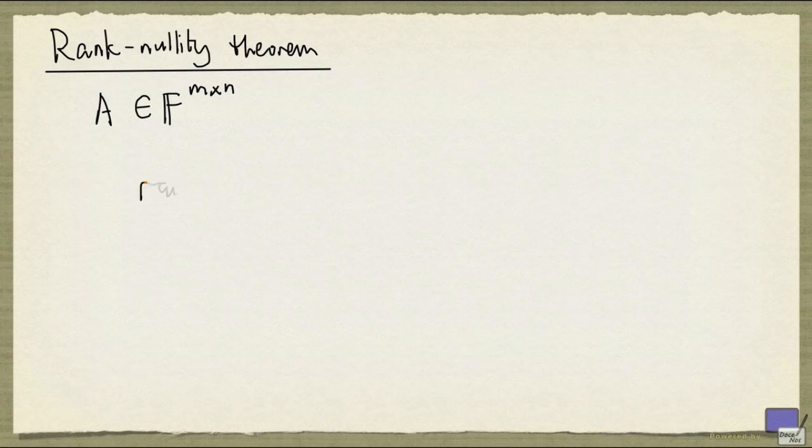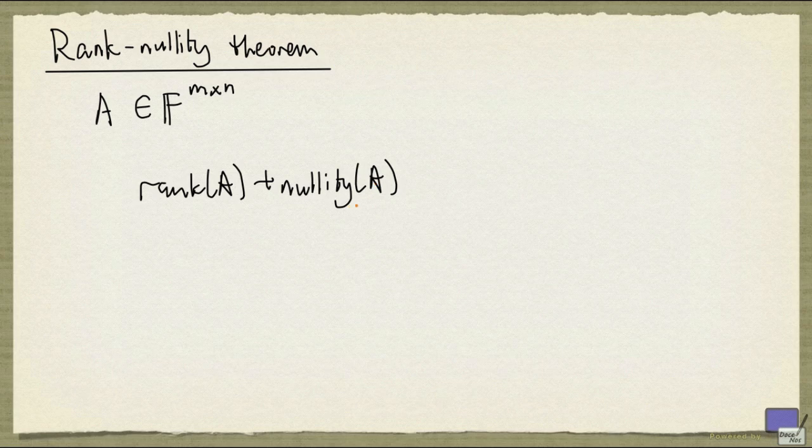Recall that the rank of A is given by the dimension of the column space of A, or the dimension of the row space of A. The two are equal. And the nullity of A is the dimension of the null space of A.